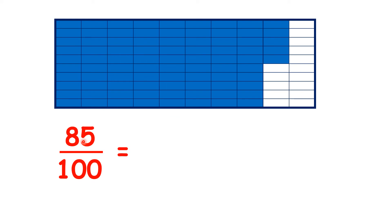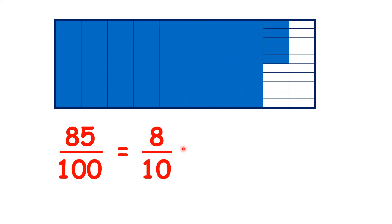So what is 85 hundredths partitioned into tenths and hundredths? We have 8 tenths and another 5 hundredths.